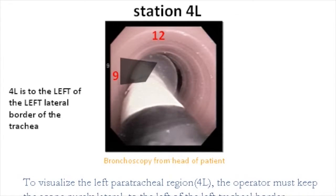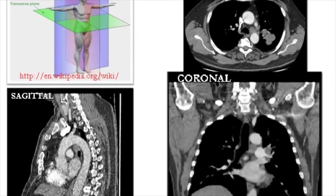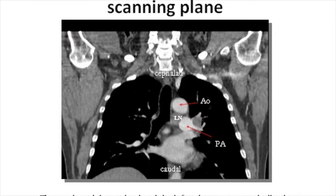Station 4L is always to the left of the left lateral border of the trachea. With the scope oriented laterally, the EBUS scanning plane correlates best with the coronal view on chest computed tomography. The coronal view correlates with the EBUS scanning plane — the aortic arch is seen proximal and the left pulmonary artery is seen distal to the lymph node.